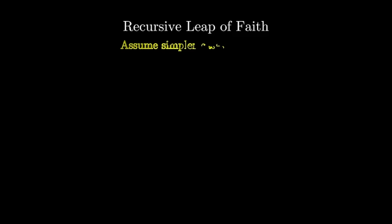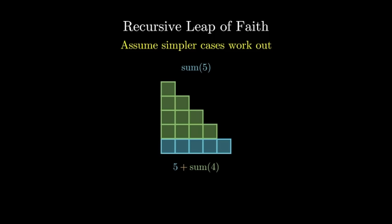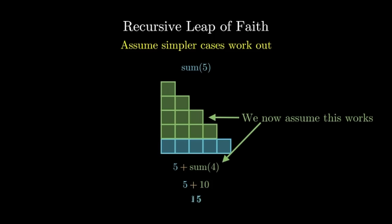The recursive leap of faith makes solving recursive problems much faster. It's all about assuming that easier versions of the problem will be correct. In this particular problem, the recursive leap of faith would say that if I wanted to solve sum called on n equals 5, let me just assume that sum on n equals 4 is going to work, and then if I add 5 to that, sum called on n equals 5 will also be correct. Don't worry if you're a little hesitant to believe in the recursive leap of faith, but it is a useful problem solving trick that helps in more complex recursive problems.